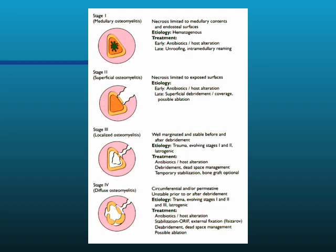Management by stage: for stage 1 hematogenous osteo, you treat with antibiotics, and if there's a localized abscess, you may need to unroof it or perform intramedullary reaming to drain the infection. For superficial osteomyelitis involving only the cortex, early cases can be treated with antibiotics — osteitis — but later cases will require superficial debridement and possibly coverage with flap coverage or skin grafting. The deeper the involvement, the more aggressive debridement needs to be, and then you get into dead space management.